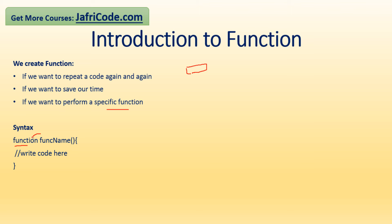You write the keyword `function`, give a space, then mention the function name, followed by parentheses, then a curly brace open and curly brace close. This is called the function body, or the code block. This is also called the function definition. Any code you want to execute should be written inside the function body. There are two steps to work with a function.